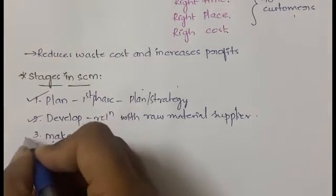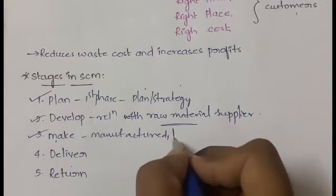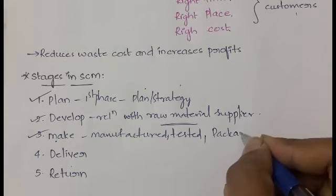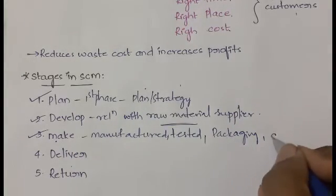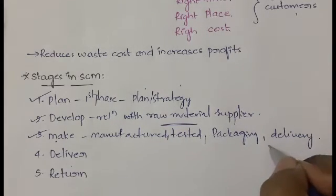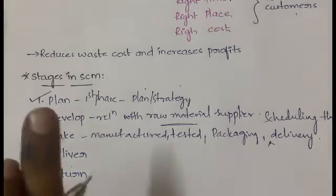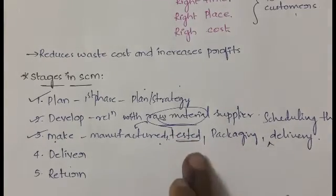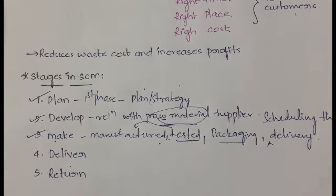The third stage is Make. Using the raw material, you will be manufacturing the product. The manufactured product is then tested to check whether it is meeting the customer's requirements. If testing is okay, it will be packed — packaging is done. After packaging, the delivery is scheduled: at what point of time the product has to be delivered to the customer is decided in this make phase.